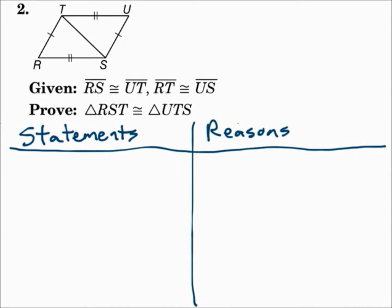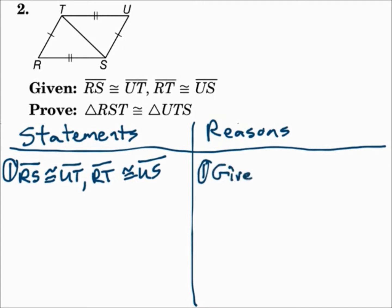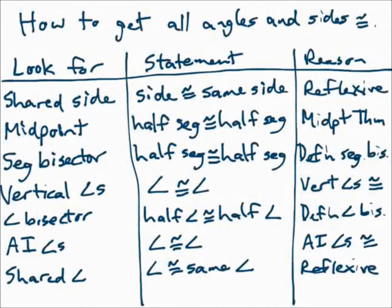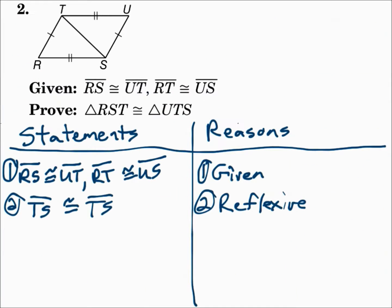Let's do a proof. Number two: given segment RS is congruent to segment UT and segment RT is congruent to segment US, prove that triangle RST is congruent to triangle UTS. Start with what you're given. That's two pairs of sides. Since I'm thinking about the SSS postulate, I need to find that third pair of sides. Looking at the chart, the triangles share a side, so segment TS is congruent to segment TS by the reflexive property.